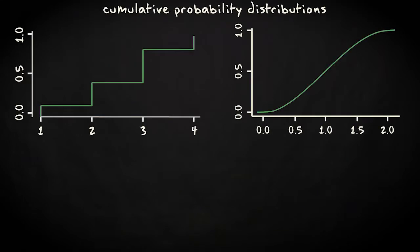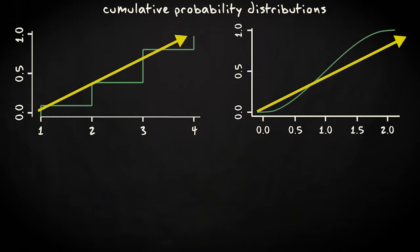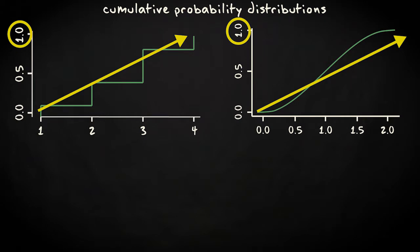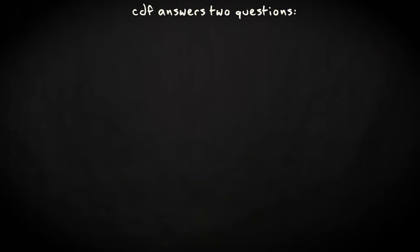As you see, cumulative probability distributions have continuously increasing values, starting at 0 and incrementing to a maximum of 1. The sum of the probabilities for all the values that the random variable can take is 1. The cumulative distribution, especially its graphical form, is very convenient because it can answer two questions.